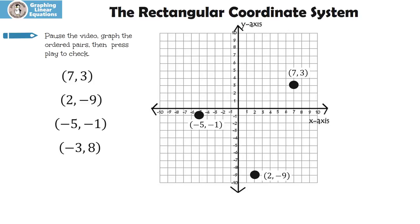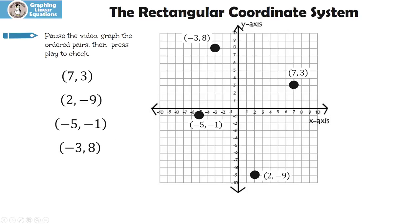Hopefully you remembered to label it. Let's look at the last one: negative three, eight. I went negative three on the x-axis and then eight on the y-axis.